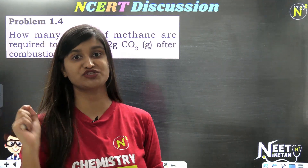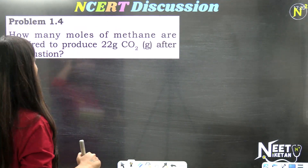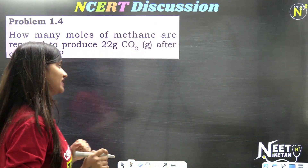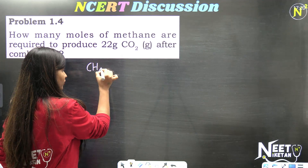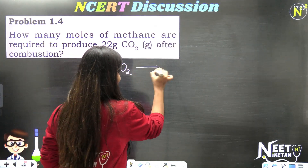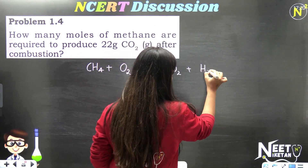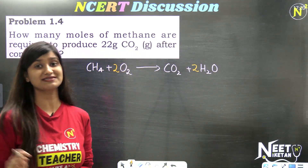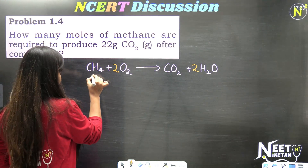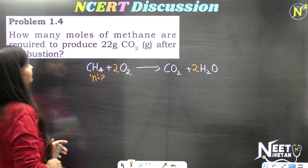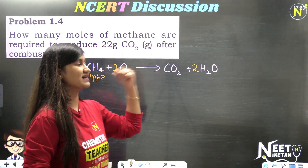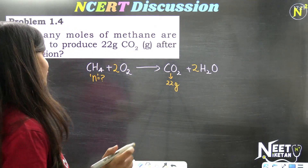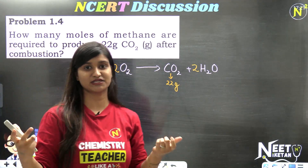Problem 1.4: How many moles of methane are required to produce 22 grams of CO2 after combustion? The same equation: CH4 + 2O2 → CO2 + 2H2O. When balanced, we note that 1 mole CH4 produces 1 mole CO2.